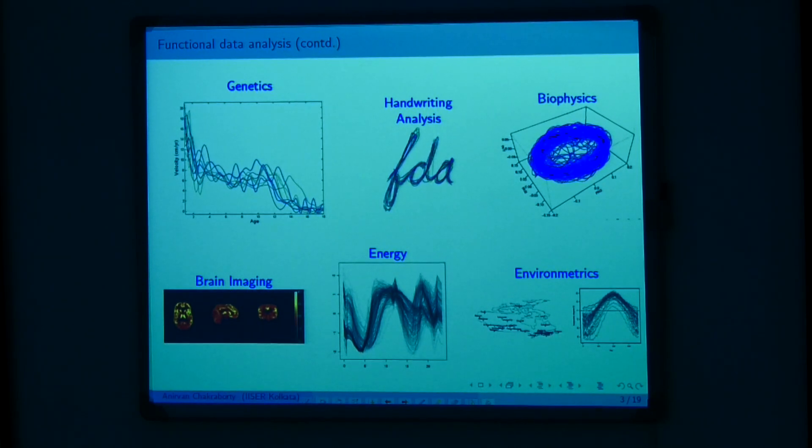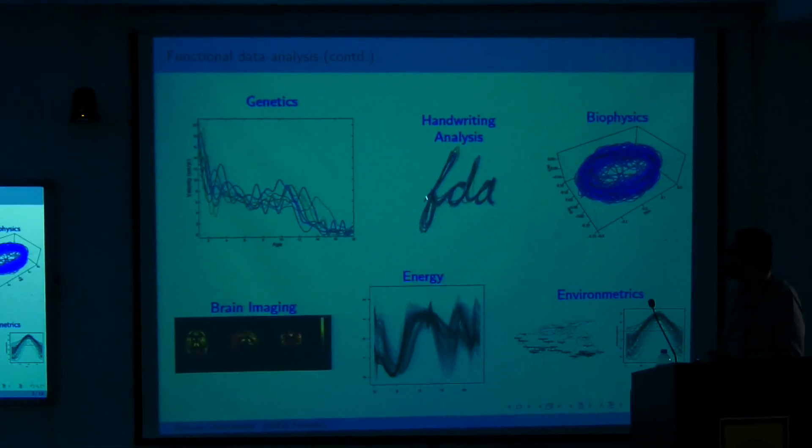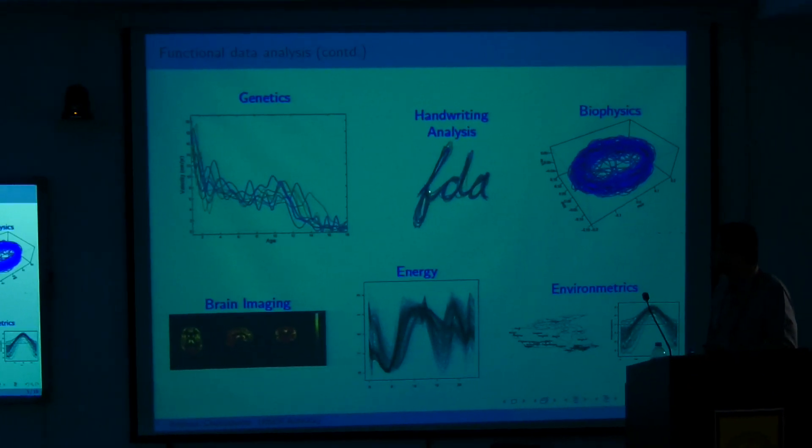This first example shows a genetics dataset with age and velocity — the growth velocity curves. Each data point is essentially a fully observed function, so one needs to be very careful in developing statistical methods for data of this kind. Another example comes from handwriting analysis, where people have written 'FDA' and we want to compare how their handwriting matches up.